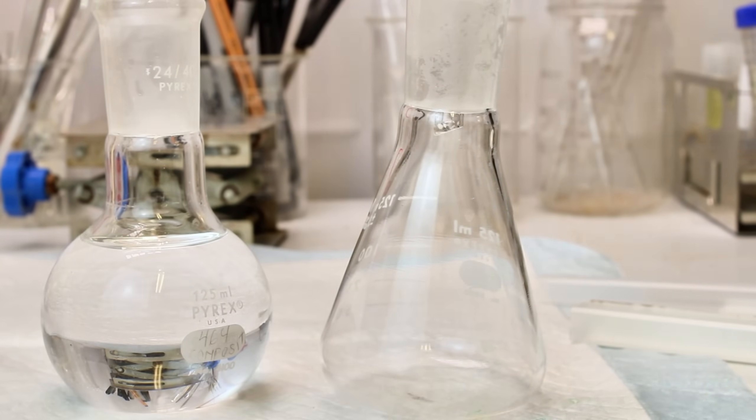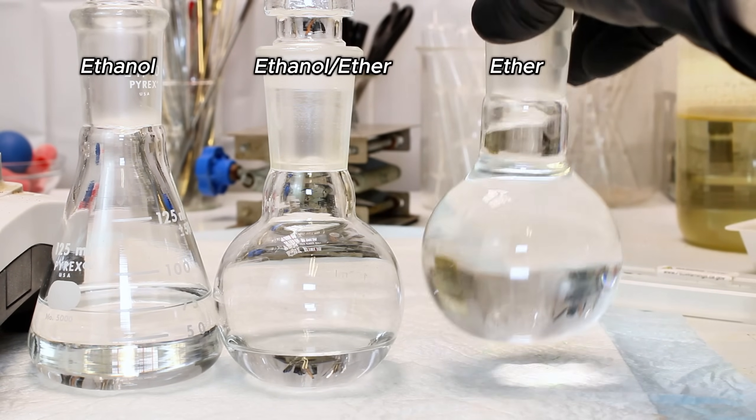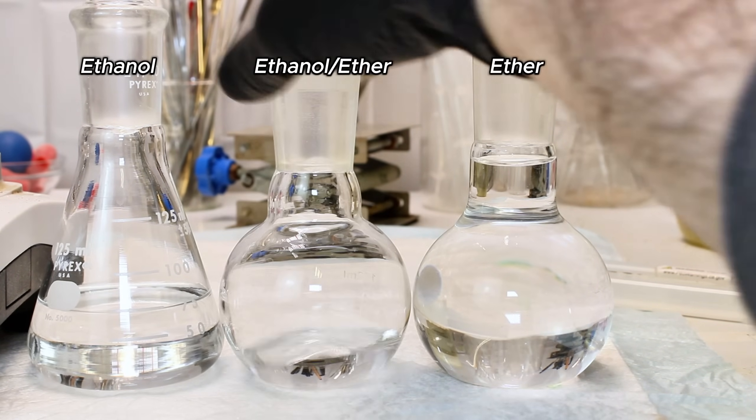I then switch out my collection flask one final time and collect everything under 80 degrees celsius, which should be mostly ethanol that I can reuse for making more ether.